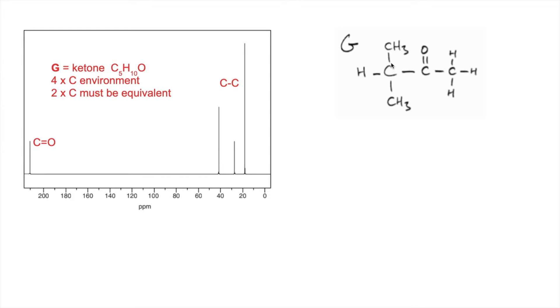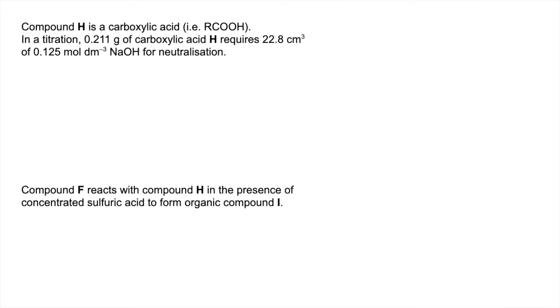So these two CH3 carbons are equivalent, so that's one environment, two, three, four. There's your peak at sort of 210, that one there, and these peaks here are obviously the other ones. So remembering how G was formed, it was formed by the reflux of that secondary alcohol, so therefore F must be that.